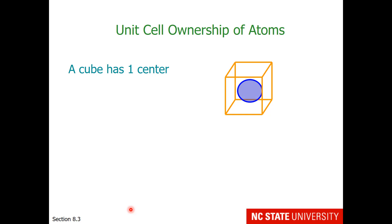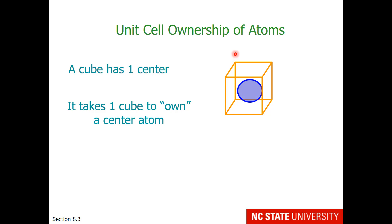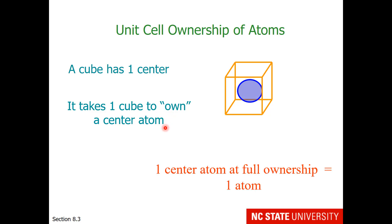Before I discuss different kinds of unit cells, first I need to talk about ownership of atoms. I'll be presenting unit cells that are based upon a cube. A cube can typically have one atom in the center, although others have more. If we look at the volume defined by the cube and the volume defined by the atom, we see that the entire atom is within this cube.